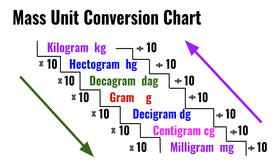Gram times 10 is the decigram, which is dg. Decigram times 10 is the centigram, which is cg. Centigram times 10 is the milligram, which is mg.